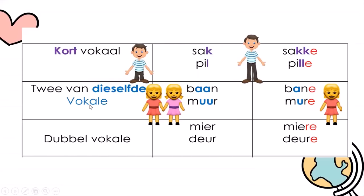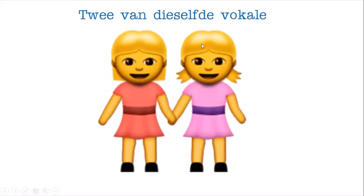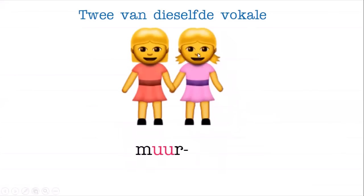Twee van dieselfde vokale - two of the same vowels. Look at that - words like 'maan' and 'meer'. We have little twins! So when someone already has twins and you say we need to make it plural, the mom would go 'no way, I already have two, I cannot handle any more.' We have two of the same - you're twins. These two is enough.